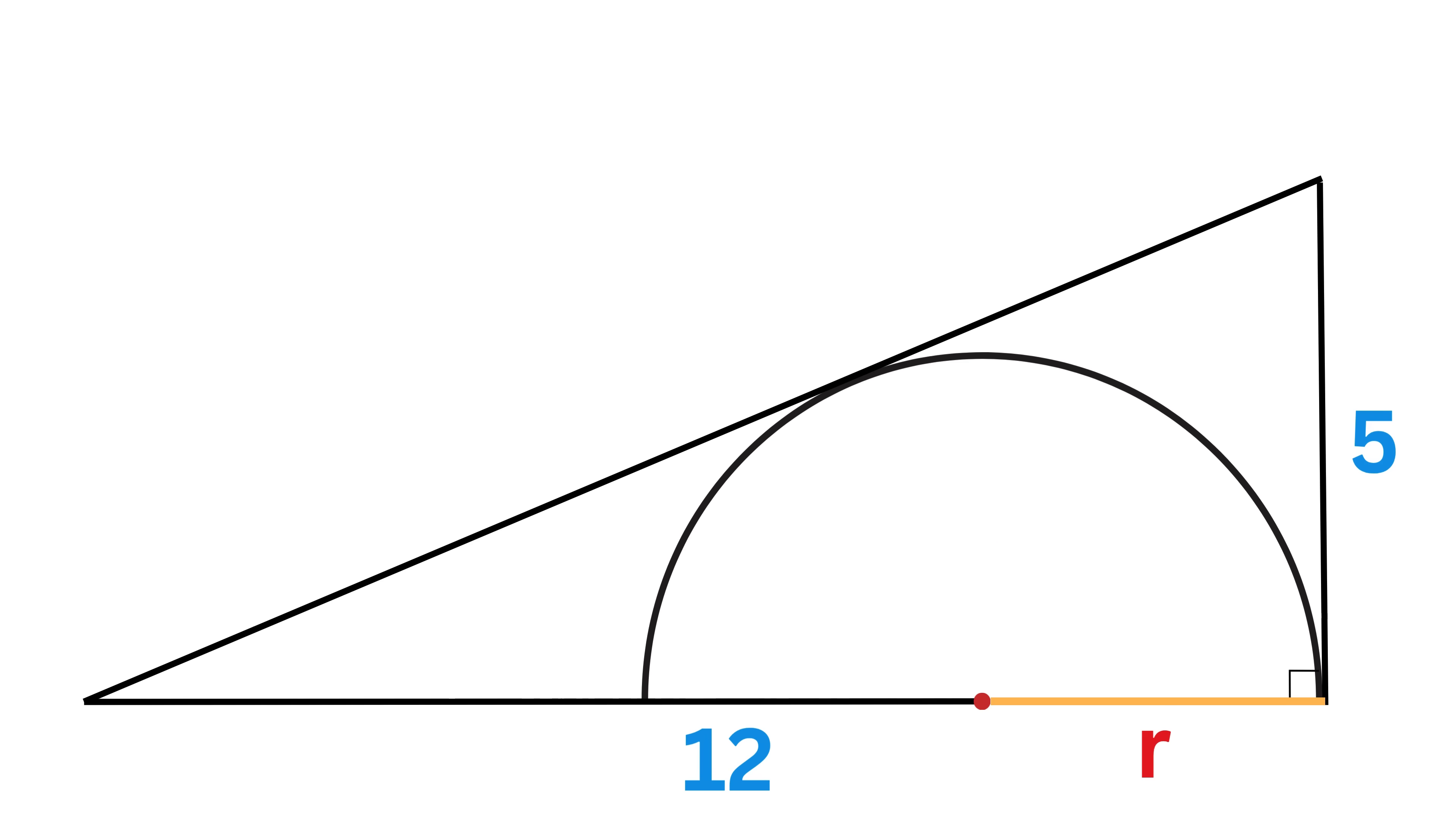This will be R, and if we draw this radius from center to this point, it will also equal R. Now think what we need. At the very least, we can try to find the hypotenuse because we all know the Pythagorean theorem and can use it as soon as we see a right triangle.